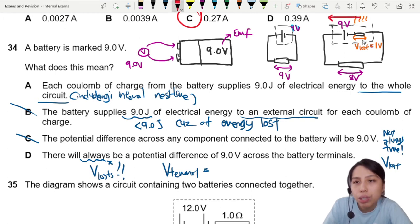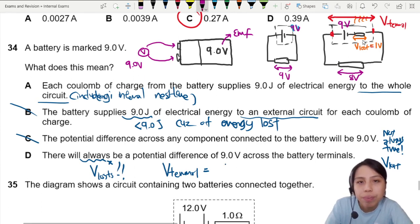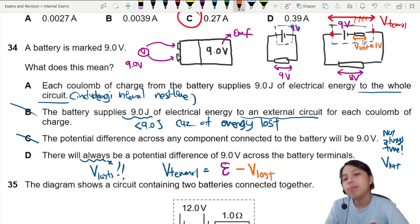And it really depends on what the EMF is. This one, chemically created, minus whatever you already lost. So, it depends on how much your lost volt is. And the lost volt will depend on current. So, no, not always 9. Can be less.